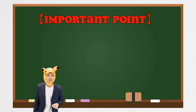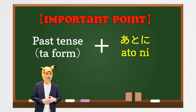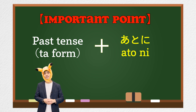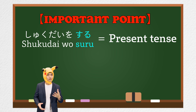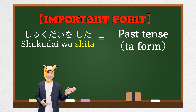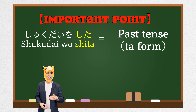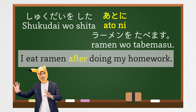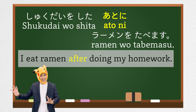Here is one important point to note: please be sure to use past tense for the verb before あとに — that is, action 1. 宿題をする is present tense, so the past tense is 宿題をした. So the correct sentence is 宿題をしたあとにラーメンを食べます.